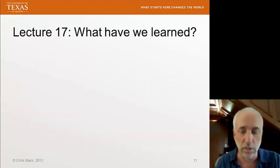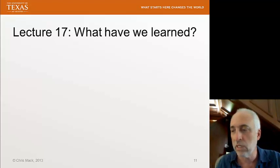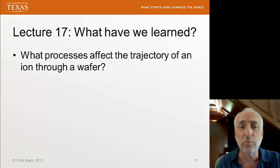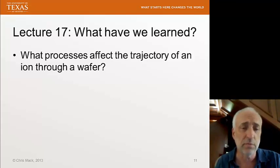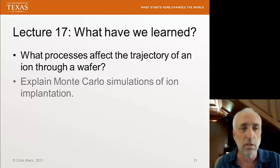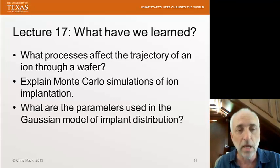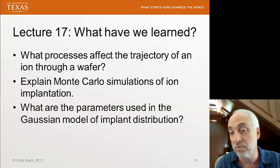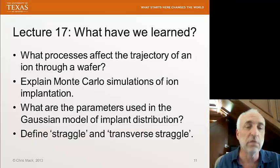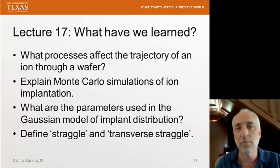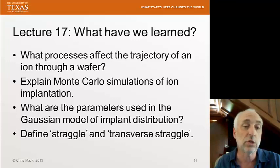In Lecture 17, you've hopefully learned what processes affect the trajectory of an ion through a wafer — the physics of an ion passing through a crystal. You should be able to explain Monte Carlo simulations of ion implantation, describe the parameters used in the Gaussian model of an implant distribution — their names and meanings — and define straggle and transverse straggle. Next time, we'll finish our three lectures on ion implantation by discussing other important phenomena such as channeling.